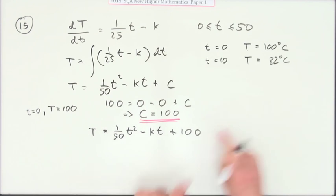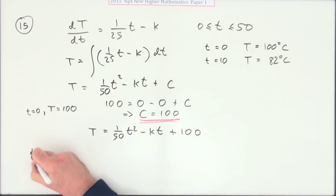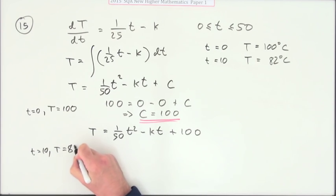Now I'm down to this with only one unknown. Now I'll use the other one: when t is 10, the temperature is 82.